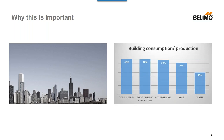Talking about building consumption: in terms of total energy, buildings use 40% of the total energy, and 40% of that total energy they use is consumed by the HVAC system. They produce 39% of CO2 emissions, 36% of greenhouse gases, and consume 25% of the water. This shows how the energy valve is going to be a really good fit for helping reduce CO2 emissions, level energy usage, and improve water usage.